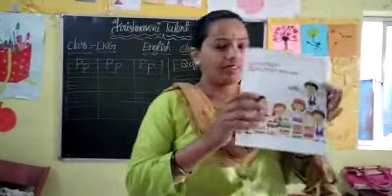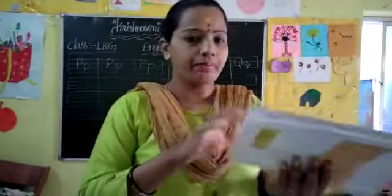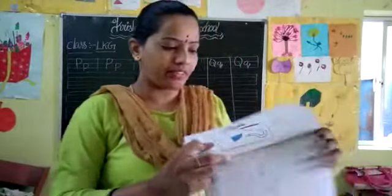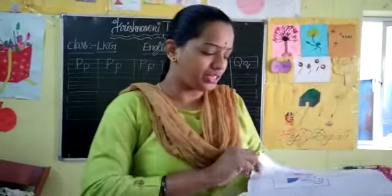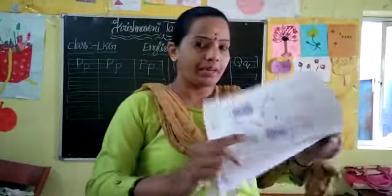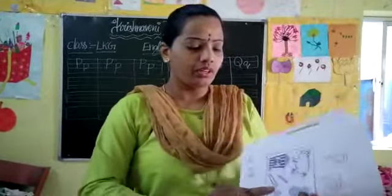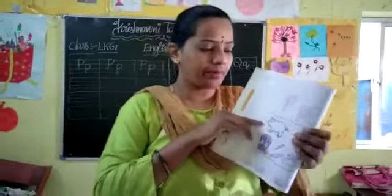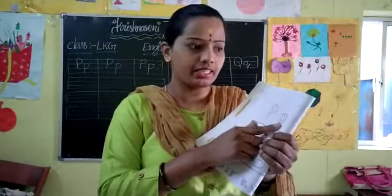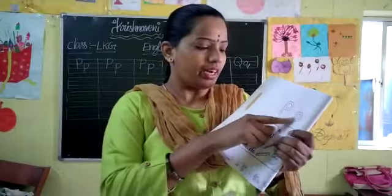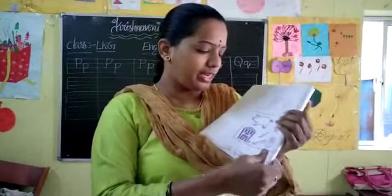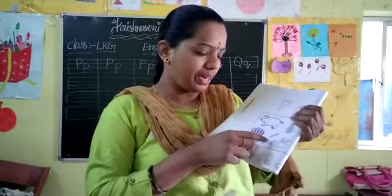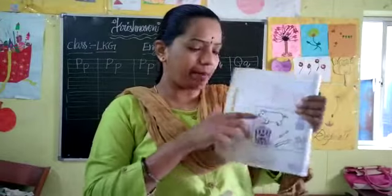Take out everyone your English practice book. Open page number 54. See here — capital P and small p is there. Okay children, trace these two P's and color this picture. P for pig, pineapple, popcorn, pencil, pin and pumpkin.